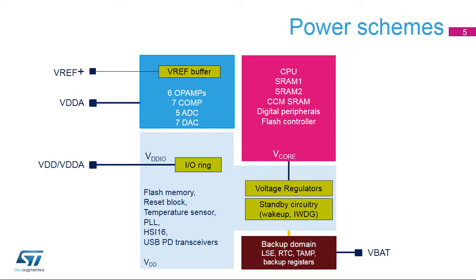STM32G4 devices have several independent power supplies, which can be set at different voltages or tied together. The main power supply is VDD, supplying almost all IOs except those part of the VBAT domain. VDD also supplies the flash memory, the reset block, temperature sensor, and all internal clock sources. In addition, it supplies the standby circuitry, which includes the wake-up logic and independent watchdog.